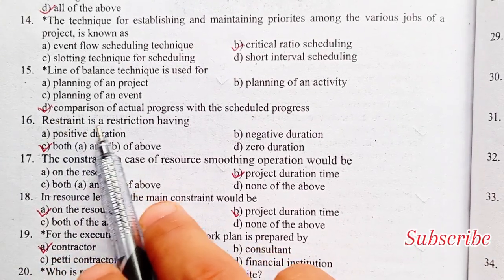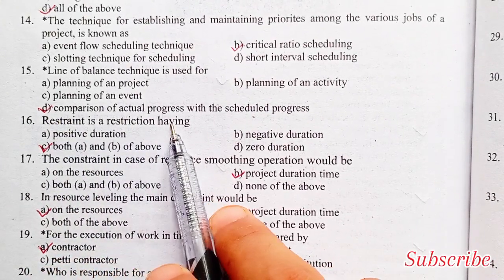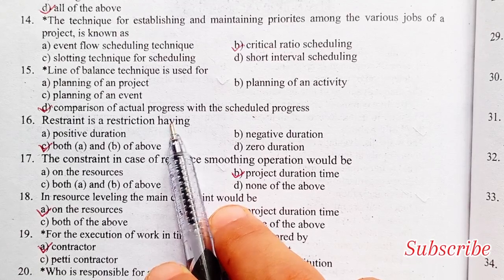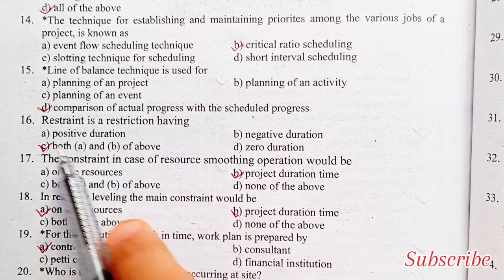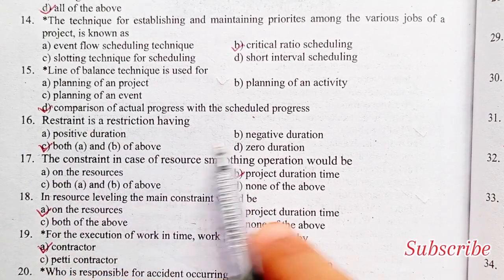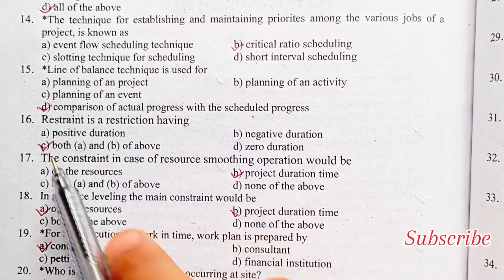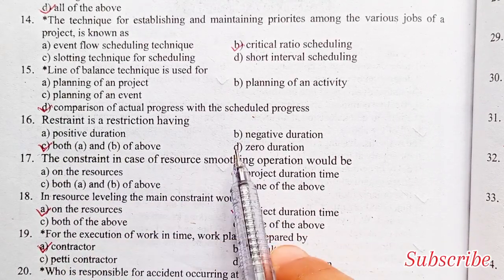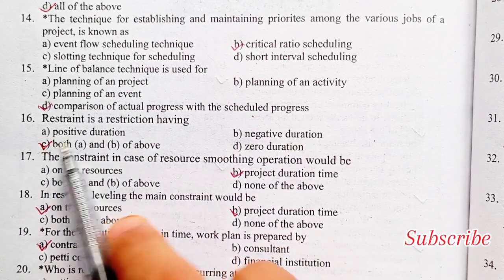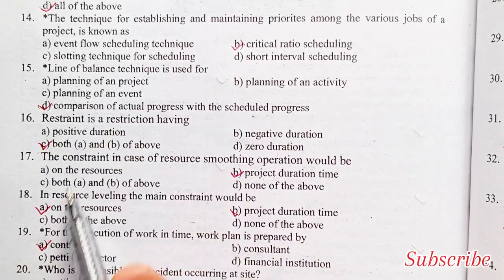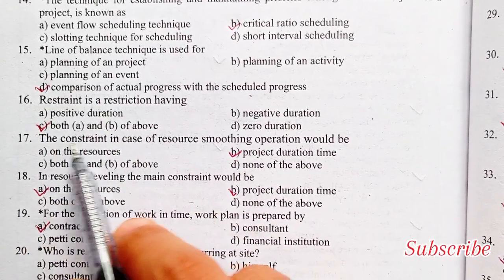Restraint is a restriction having: positive duration, negative duration, both A and B, or above zero duration. Option C is the right answer — both A and B.